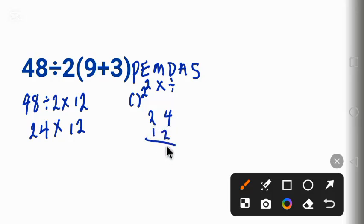2 times 2 is 4, 2 times 4 is 8, 2 times 2 is 4. 1 times 4 is 4, 1 times 2 is 2. So we add it: this is 8, this is 8, and this is 2. So the correct answer is 288.